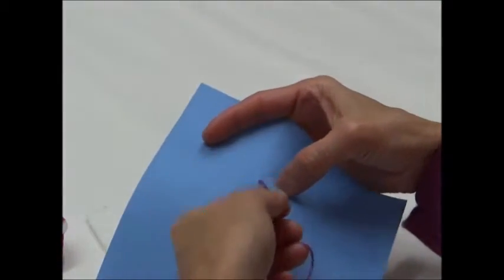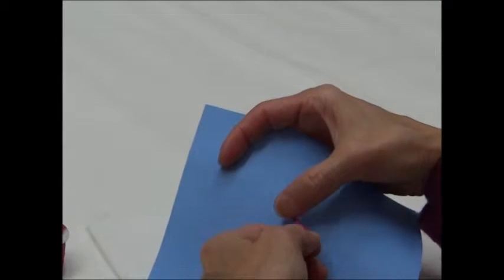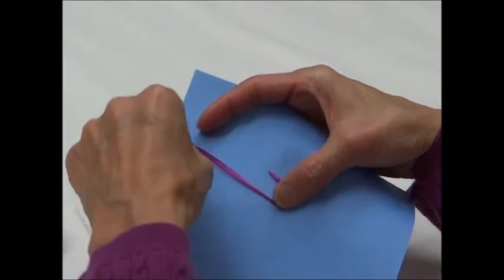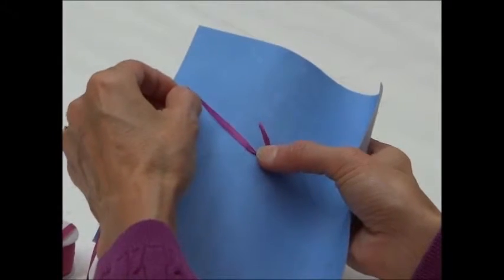You pull it through, make sure it's straightened from the point of entry and then hold on to it and you're going to make a V. So it looks like this, like the letter V.